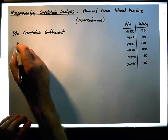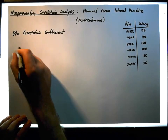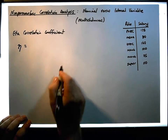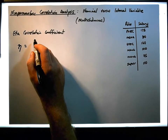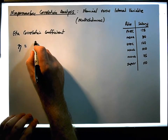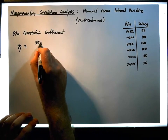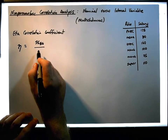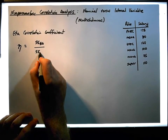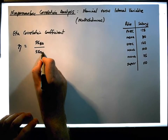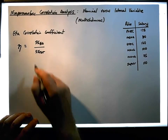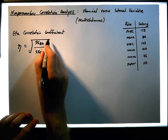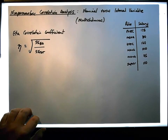So the eta correlation coefficient is simply equal to the sum of squares between groups relative to the sum of squares total — and more importantly, it's the square root of that ratio, so we have to calculate the square root of SS_between divided by SS_total.